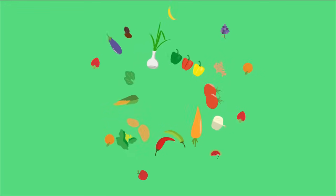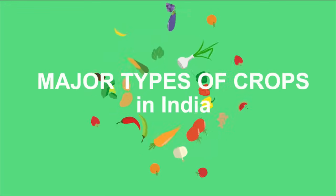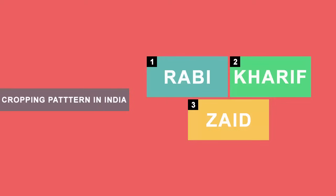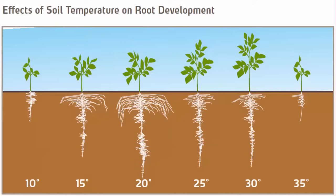In this video we will learn about major types of crops that exist in India. Before we do that, we need to first understand the cropping pattern in India — that is, what is Rabi, Kharif and Zayed crops. If you understand how crops are classified into these three patterns, then you will have a better understanding about their origination, properties and characteristics.